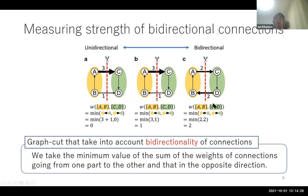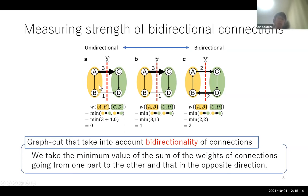Let us consider another example where there is a bidirectional connection between A,B and C,D. In this case, even if we take the minimum of two and two, the value becomes two. So the strength of bidirectional connection is two. By using this measure — which takes the minimum value of the sum of the weights of connections in two directions — we can measure the strength of bidirectional connections. If the connection is bidirectional, the value becomes large; if unidirectional, it becomes small or equal to zero.